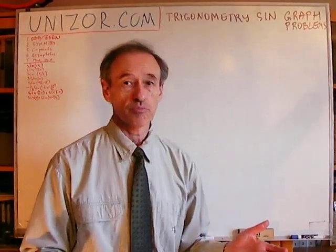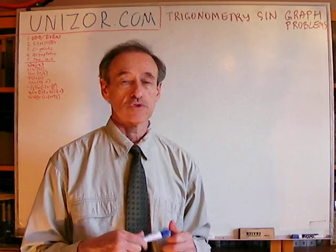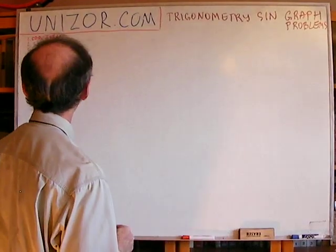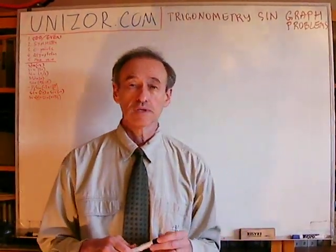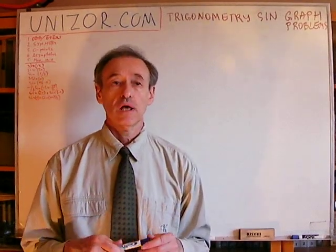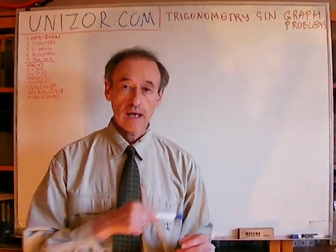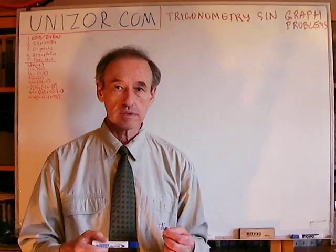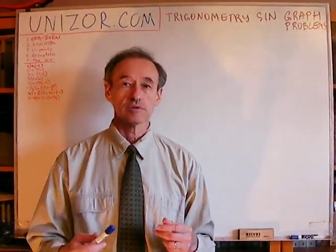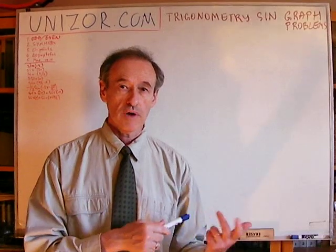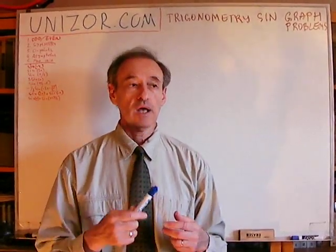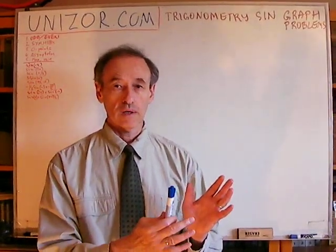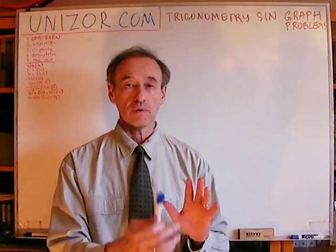Periodicity is obviously important. The periodicity is 2π for sine and cosine. It's π for tangent and cotangent. Next is asymptotes. Functions like tangent, cotangent, secant, and cosecant have something in the denominator which can equal zero. At these points, the function has an asymptote, and you have to analyze the sign of the function on the left and right of the asymptote.